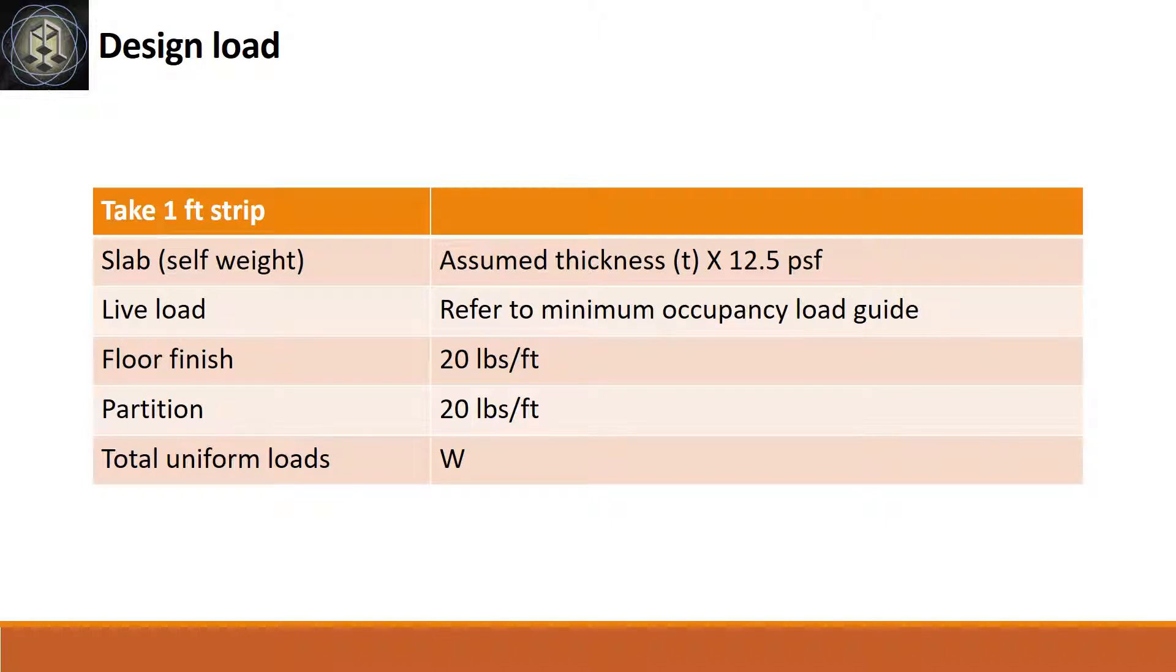Get the total uniform load expressed as one foot strip by summing up the following: Self-weight of slab equals assumed thickness multiplied by 12.5; live load from minimum occupancy load guide; floor finish and partition, if any.